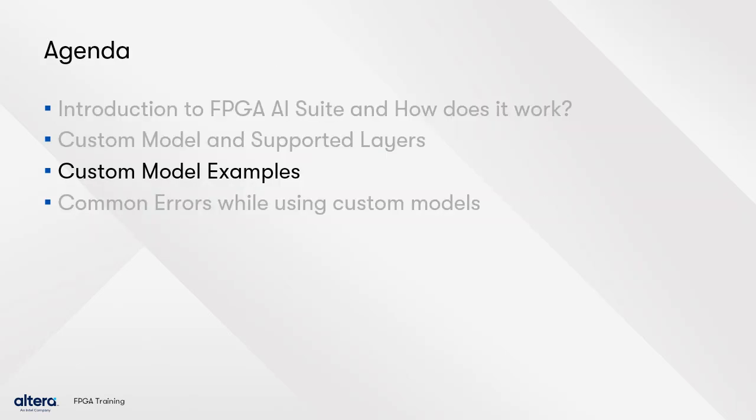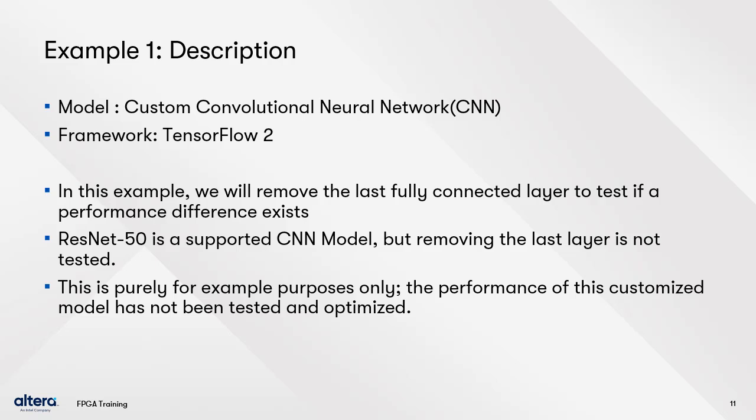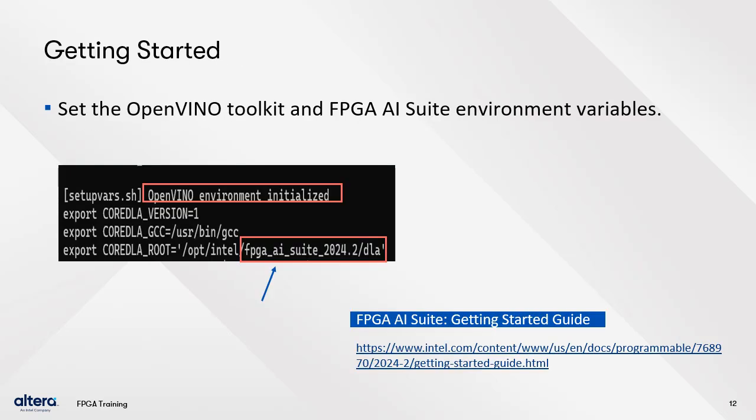Example one is a custom CNN model based on the TensorFlow 2 framework. In this example, we will remove the last fully connected layer to test if a performance difference exists. ResNet 50 is a supported CNN model, but removing the last layer has not been tested — this is purely for example purposes only. To get started, set the OpenVINO Toolkit and FPGA AI Suite environment variables properly; refer to the latest FPGA AI Suite Getting Started guide for installation and setup details.